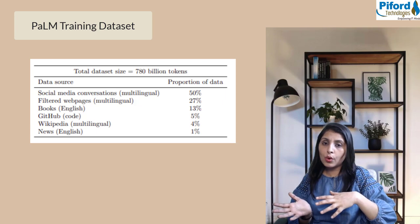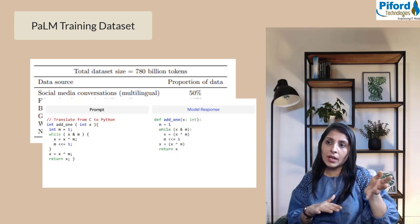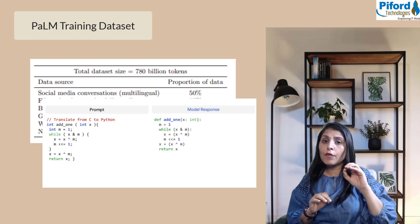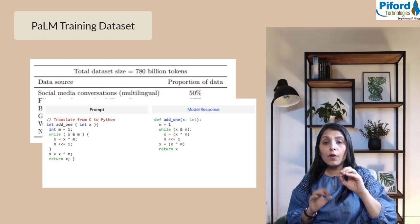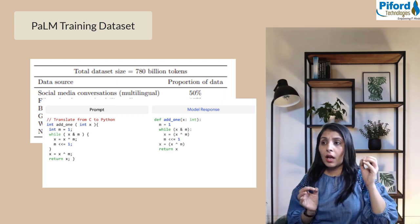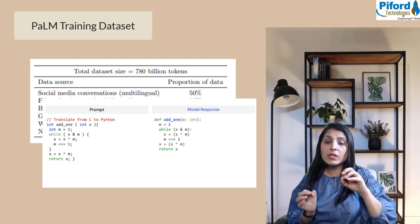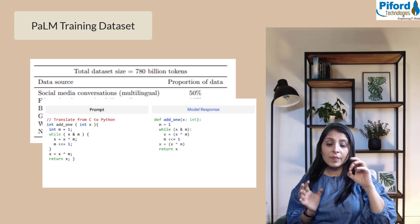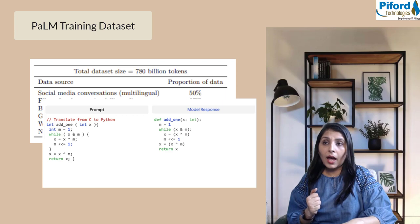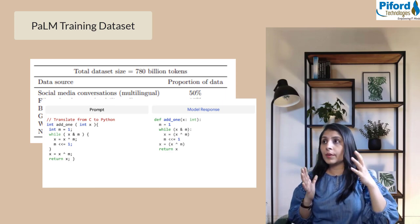PaLM is trained only on 5% of data related to coding, the rest is other things. Based on this 5% only, this model is writing code for us and it's doing quite well.